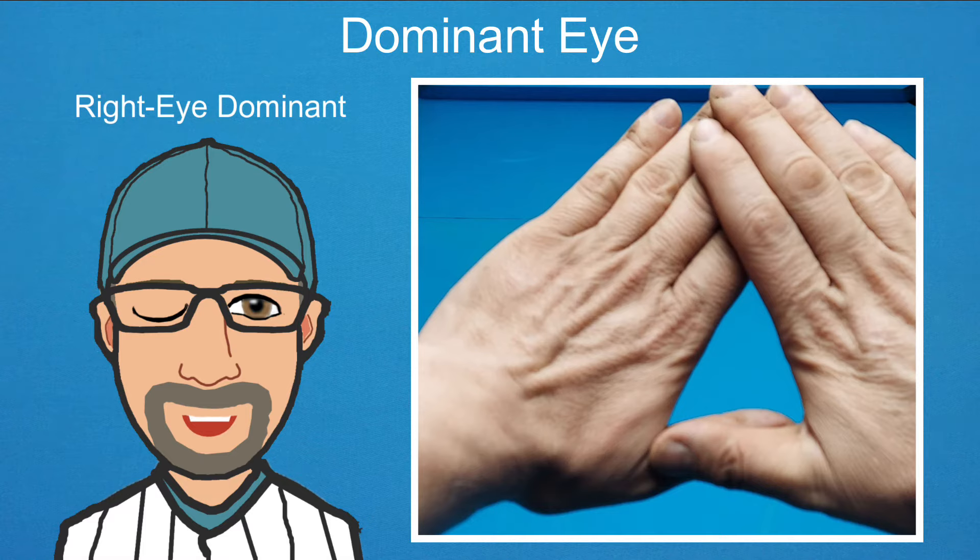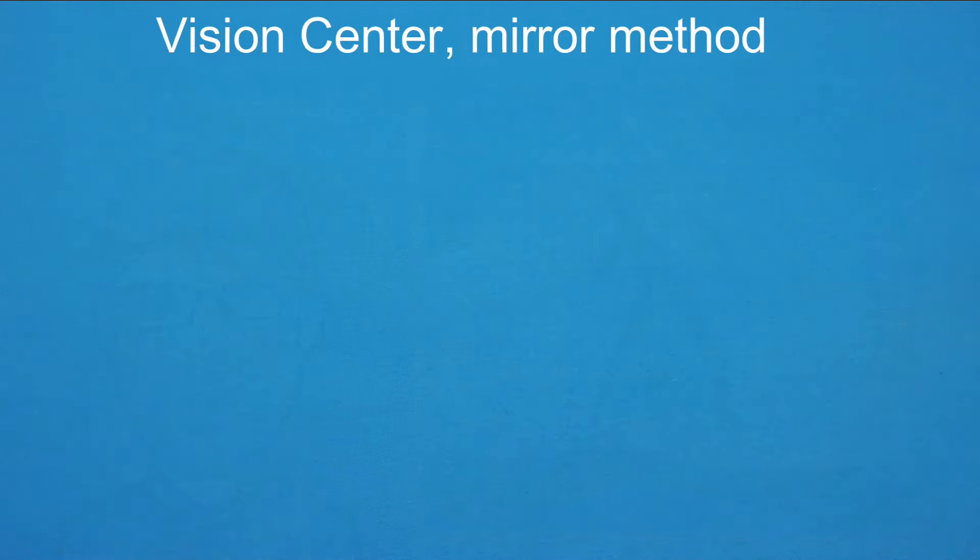When a right eye dominant person has their left eye closed, your hands don't shift in the field of view because your brain gives preference to that eye, and the vergence is close to your vision center. And now what you've been waiting for, I'll show you two ways to find your vision center.